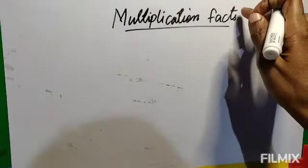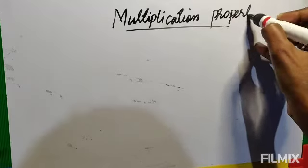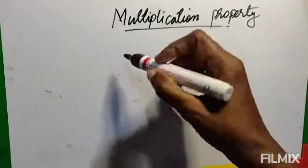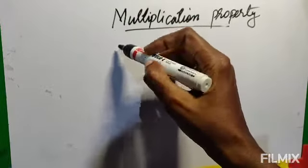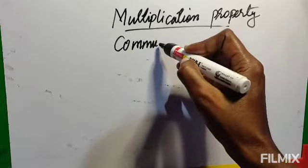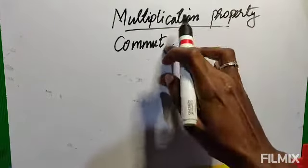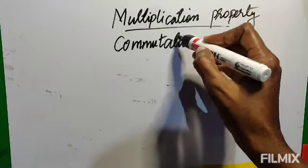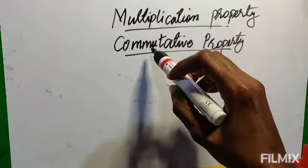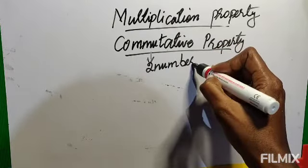Multiplication facts — we can also say multiplication properties, properties of multiplication. So you learned here the property of zero and property of one. In addition and subtraction you learned the associative property and commutative property. Those same properties are there for multiplication also. So now I am going to teach commutative property for multiplication. This is the same thing as in addition. In commutative property there are two numbers — commutative means communicating, and to communicate you need two persons.